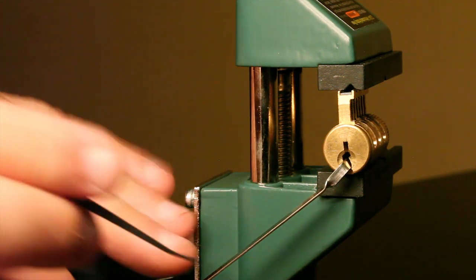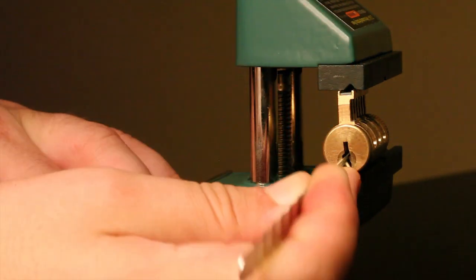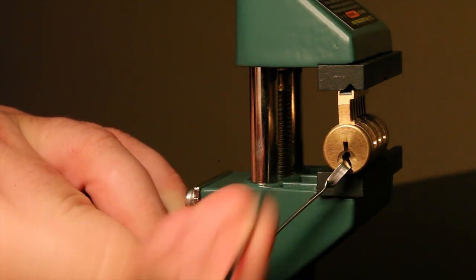But there are a couple of drawbacks. Number one, when you're working in the lock, it severely limits the amount of room that you can actually work with your pick because your tension wrench is in the way.